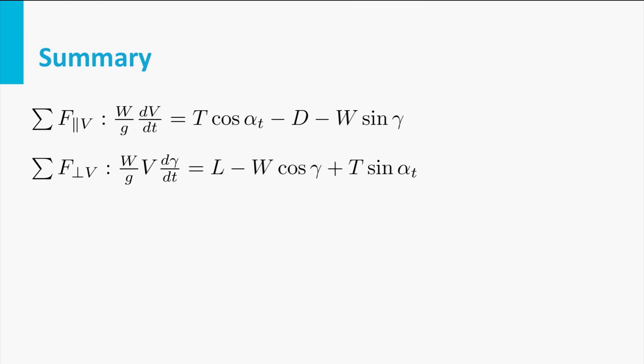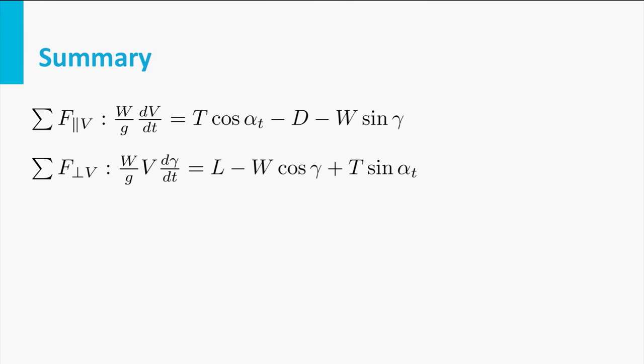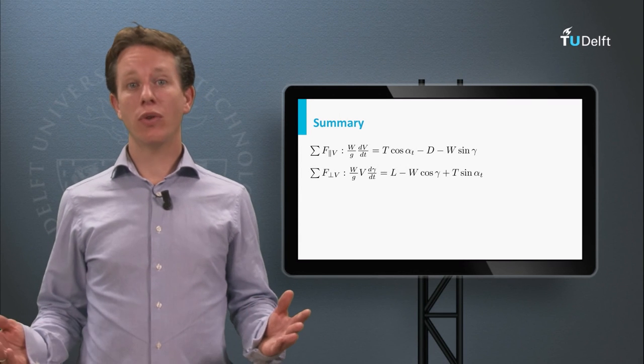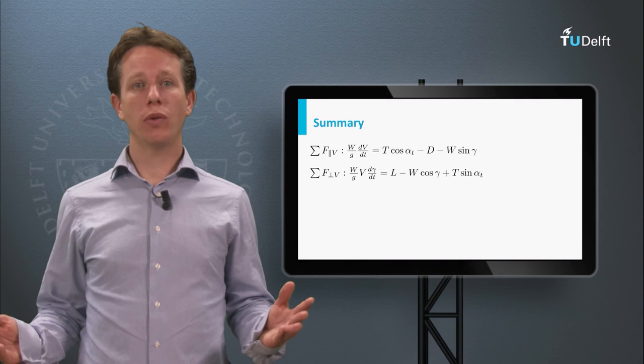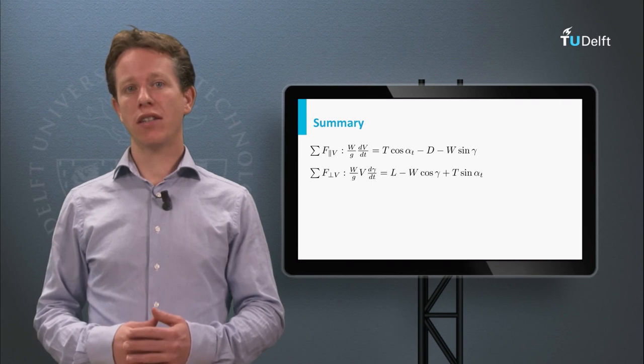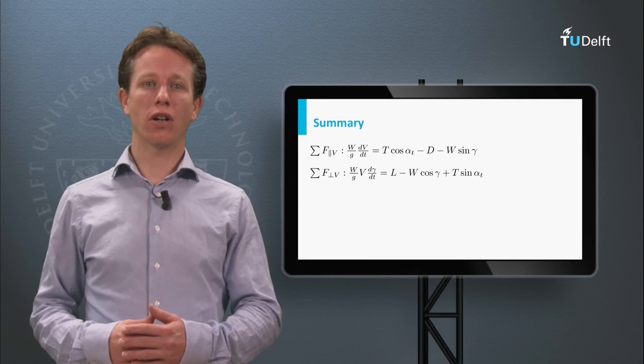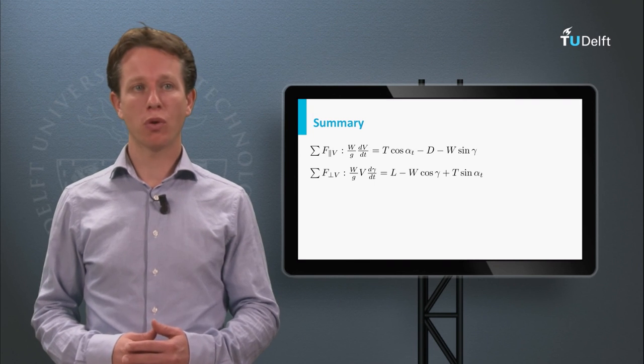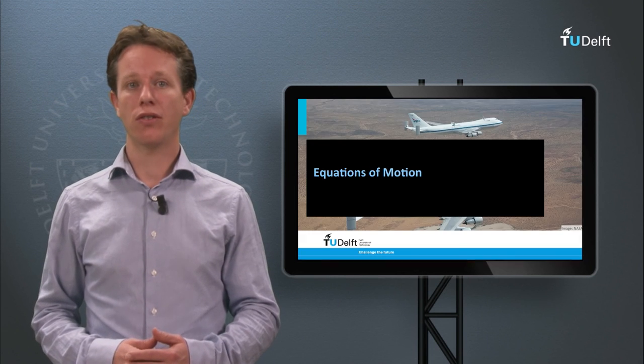So now we have two equations of motion which describe the performance of an aircraft in a two-dimensional plane. These two equations of motion will be used in the next lectures for our aircraft performance calculations.